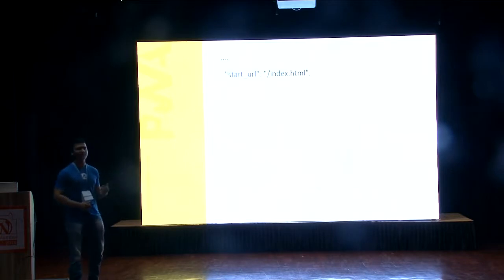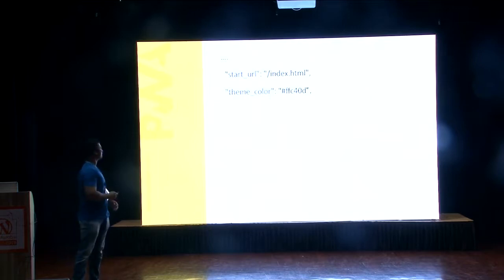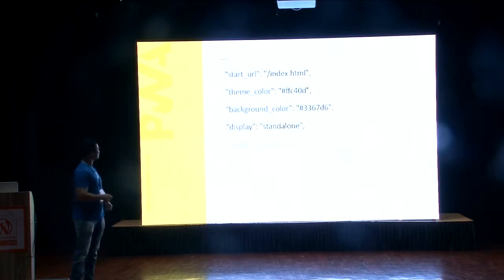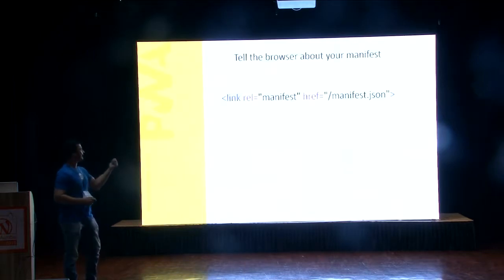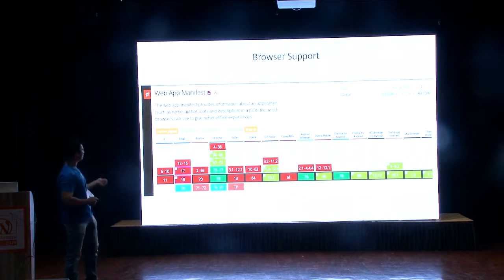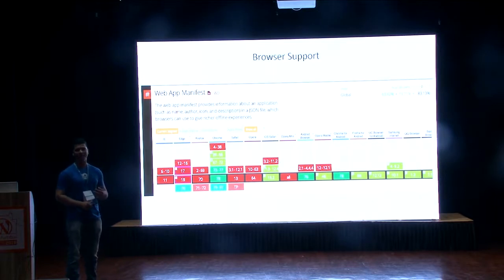Then you have the start URL — this means when the user opens the application from mobile, what page should it land on. Theme color sets the theme color of your app and the background color. Display standalone means whether you want to show a web bar on top or not — it will run in standalone mode. You also need to tell your browser about the manifest by linking it. For browser support, Chrome is always on top, Edge is supported in the latest version, and iOS Safari has some support — not all. We'll come back to iOS.